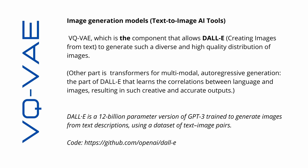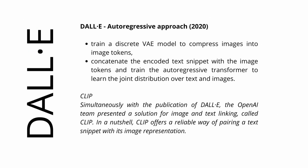I have the GitHub code here if you want to look at the implementation. With DALL-E there was also CLIP — a solution for image and text linking. The autoregressive approach has two main points: we train a discrete variational autoencoder to compress images to image tokens — and now you understand what image tokens are — and then we concatenate the encoded text snippet with the image tokens and train an autoregressive transformer to learn the joint distribution over text and image.